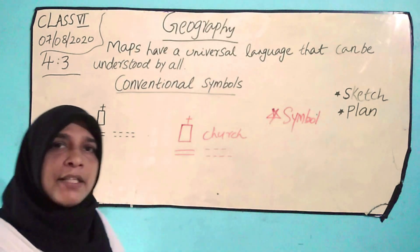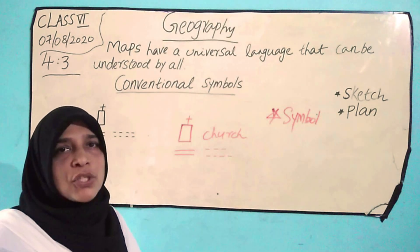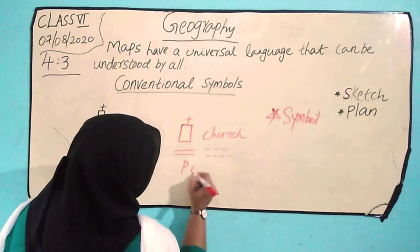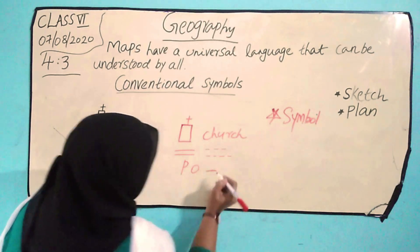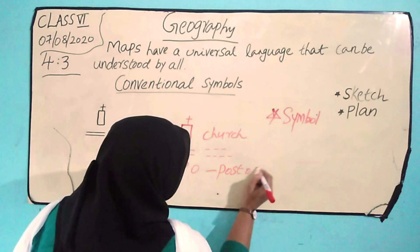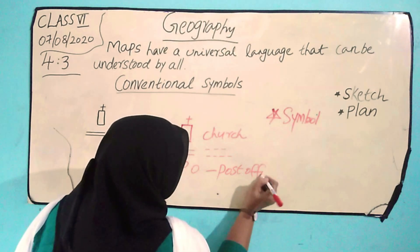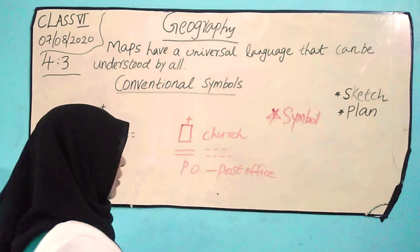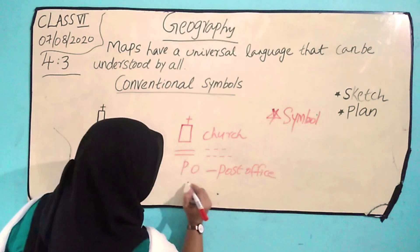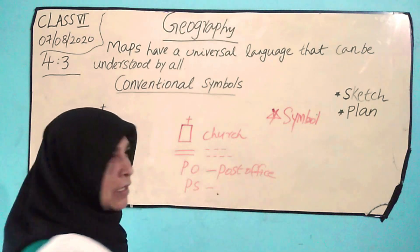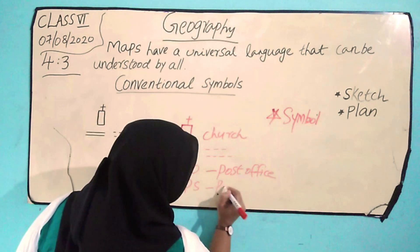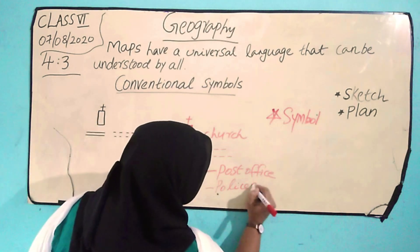Some letters are also used in maps. PO means post office, and PS means police station.